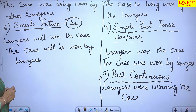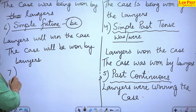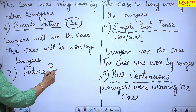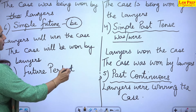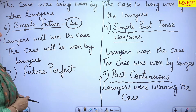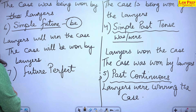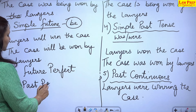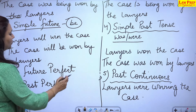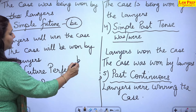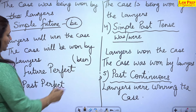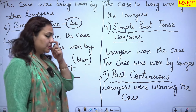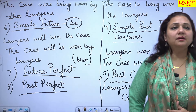Moving on to future perfect and past perfect tenses. In both cases, we use the word 'been,' just as we did in present perfect tense. Let's make these changes accordingly.